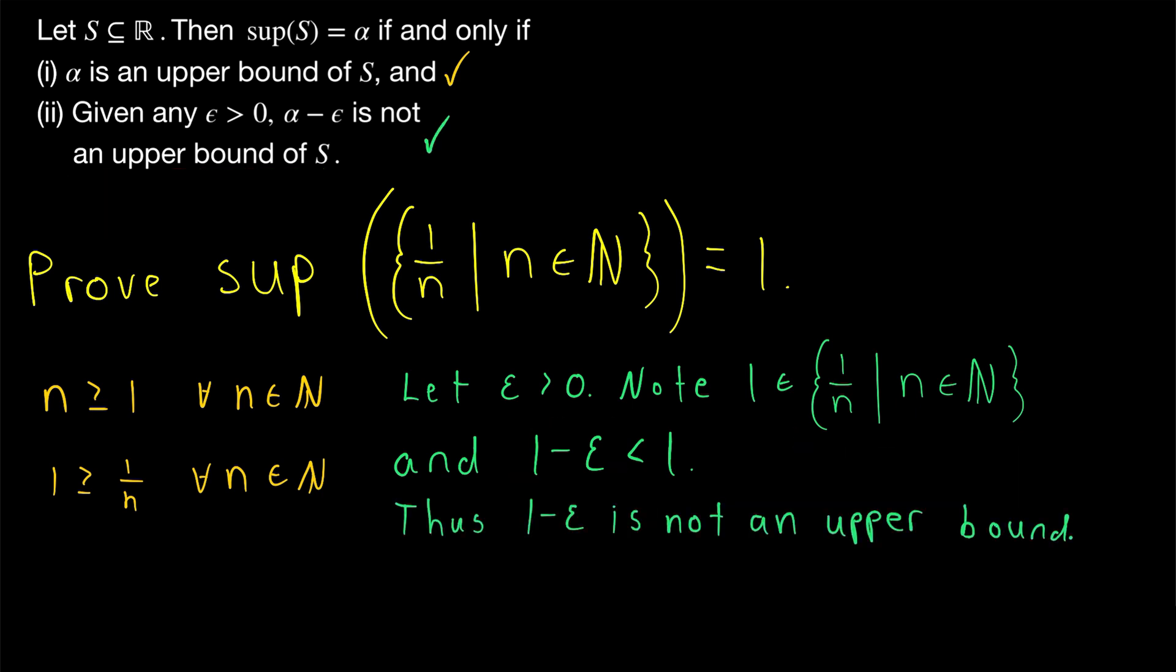And so we've proven the second condition. Now we've proven that 1 is an upper bound of the set of reciprocals of natural numbers, and we've proven that if we subtract any positive number from 1, we no longer have an upper bound. Thus, by definition, the supremum of the set of the reciprocals of natural numbers is equal to 1.